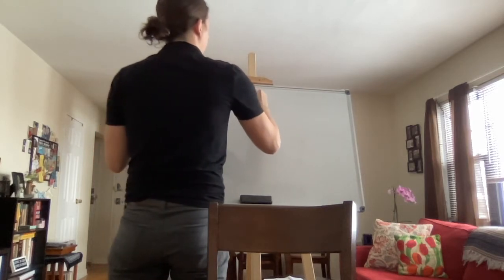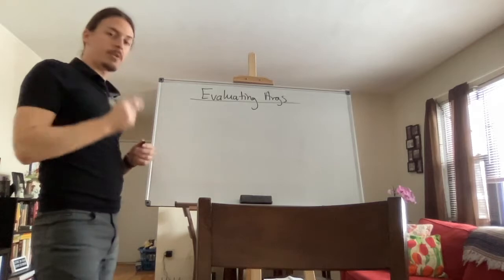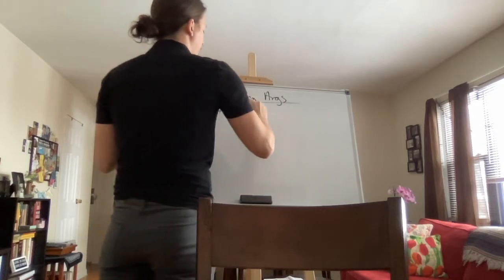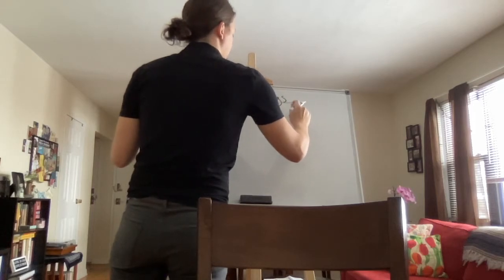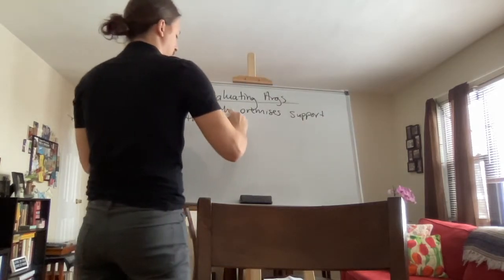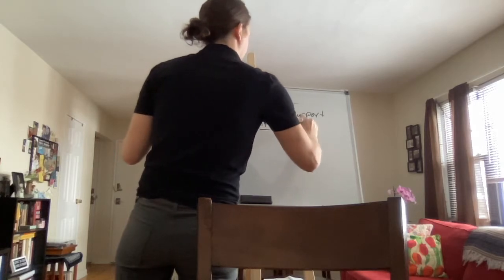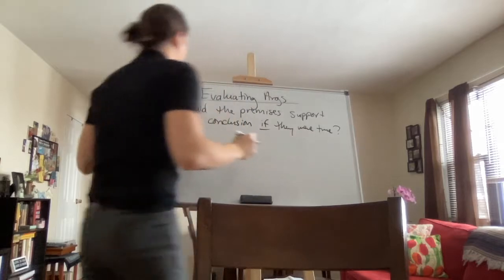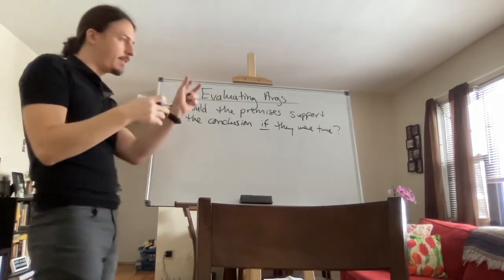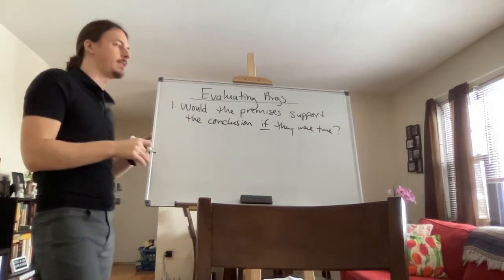No matter the kind of argument we are evaluating, we ask two questions. The first question is: would the premises support the conclusion if they were true? And that's the key — the 'if.' You first look at the relationship between the premises and the conclusion. You don't look at any specific premise and think about whether it's true or not — that's not what you do when evaluating this quality.